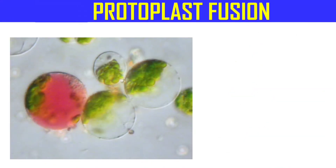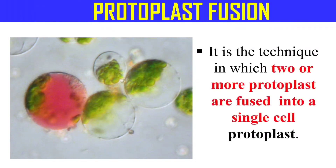In this step, two protoplasts are allowed to fuse with each other. After their fusion, they form a single cell which is known as a somatic hybrid cell. So, how does this protoplast fusion take place?